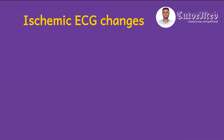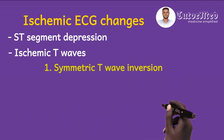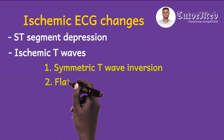Let's look at the ECG changes that commonly occur in non-ST elevation ACS. The first is ST segment depression. You may also see ischemic T waves — one manifestation is T wave inversion. Most importantly, these inverted T waves have symmetrical halves, meaning if we draw a line through the T wave we will have two equal halves. For an ischemic T wave, the T wave will be discordant with the QRS direction — that is why it is inverted — and the halves will be symmetrical.